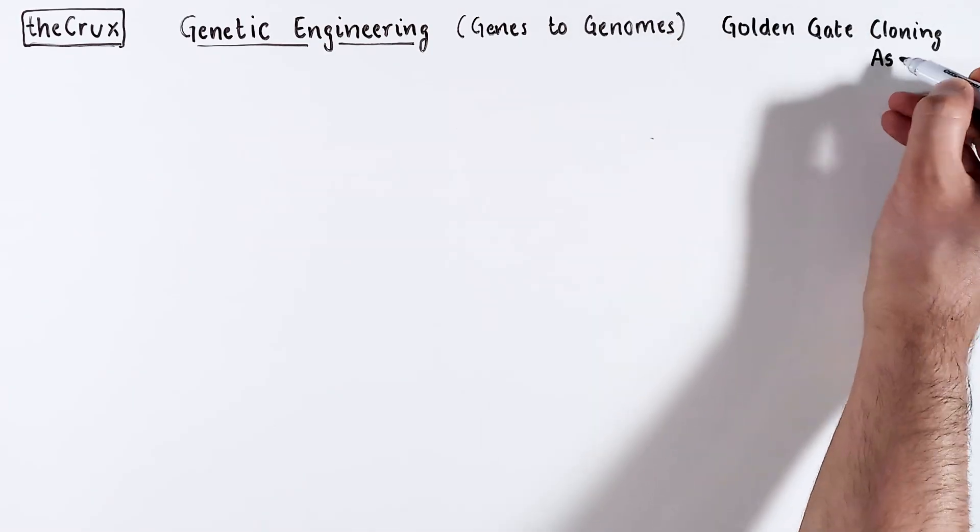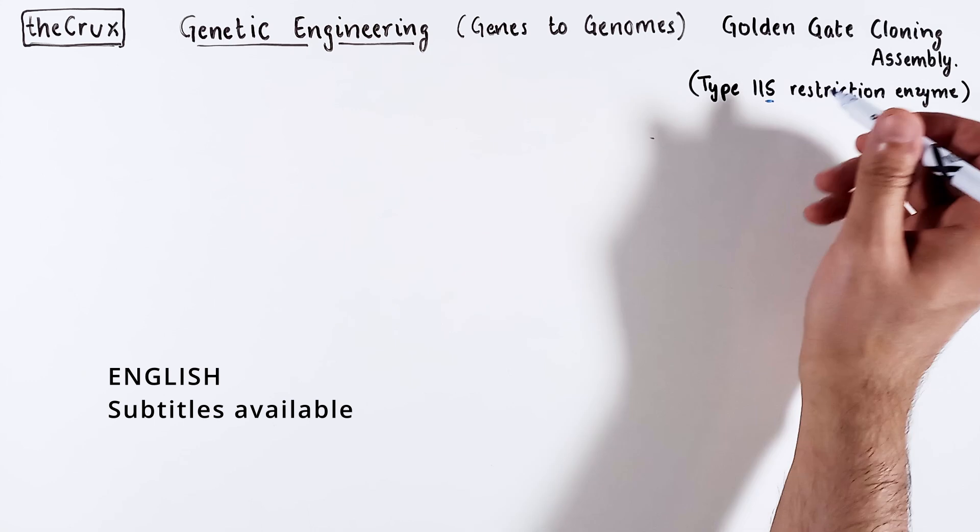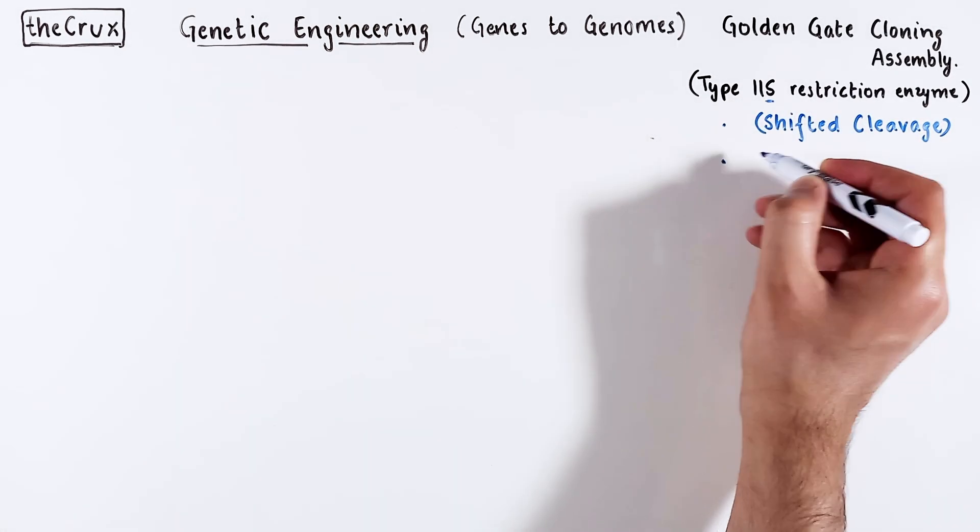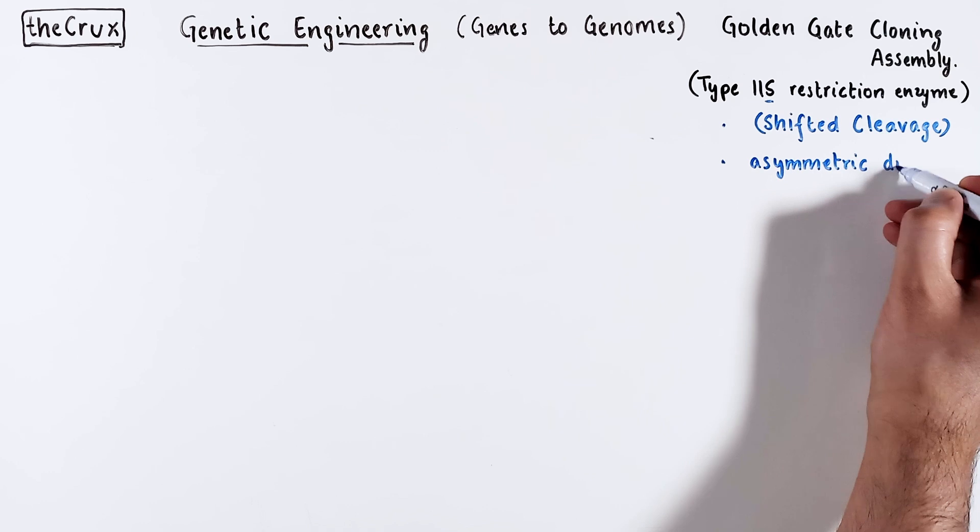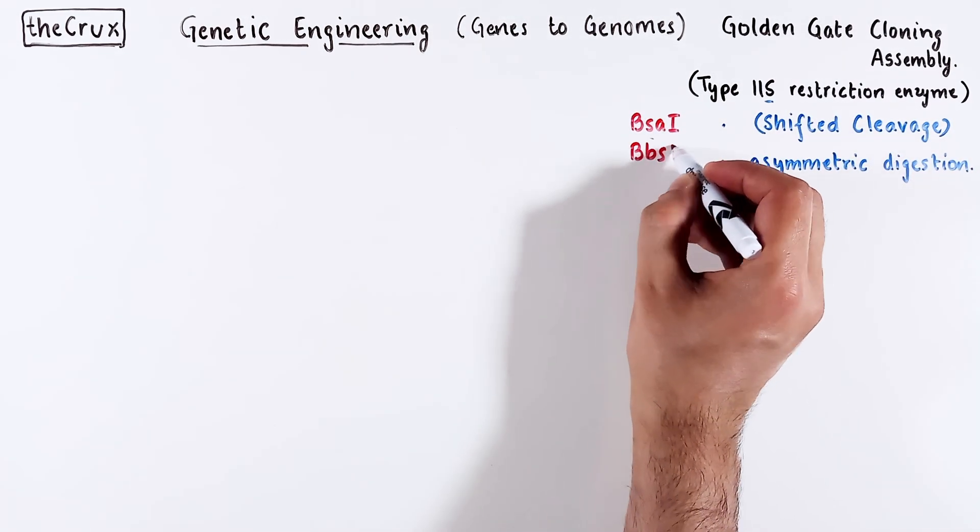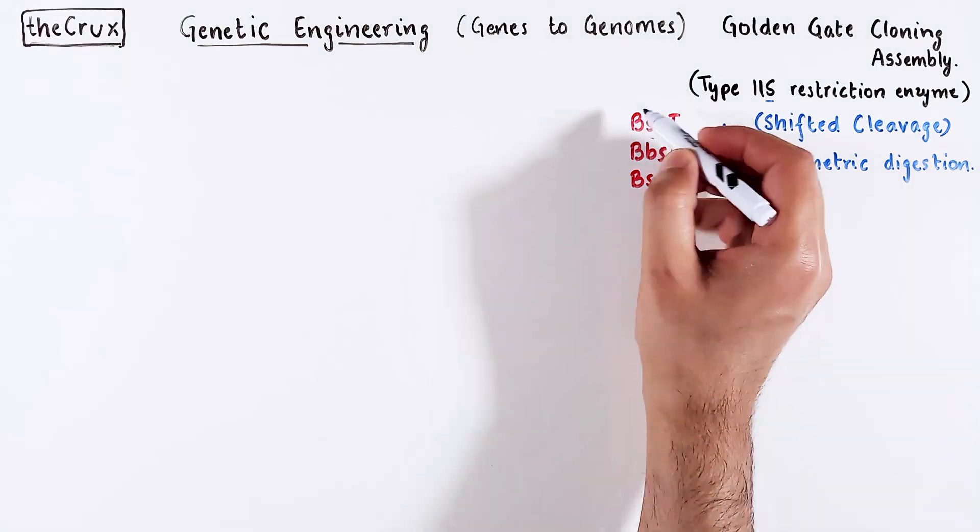Golden Gate cloning or Golden Gate assembly uses Type 2S restriction enzymes. The S stands for shifted cleavage, and this crucial property implies that the DNA of interest is digested asymmetrically. Typically BSA1, BBS1, and BSMB1 are most commonly used enzymes in Golden Gate cloning.